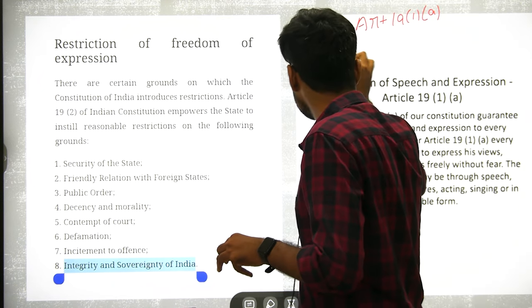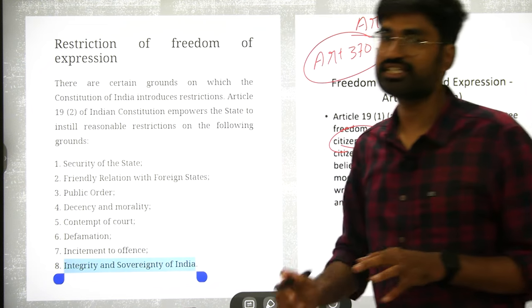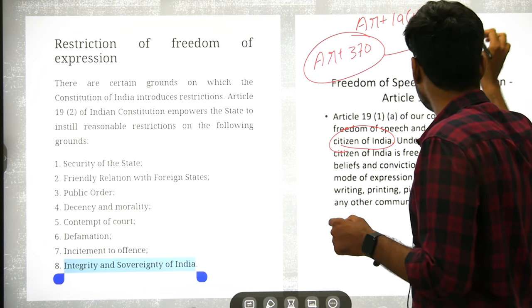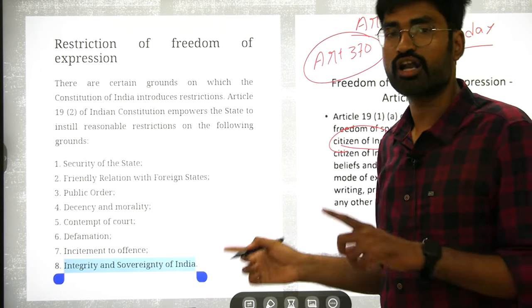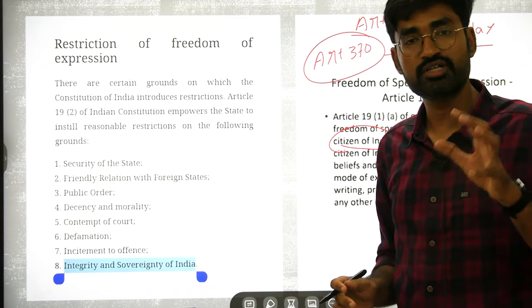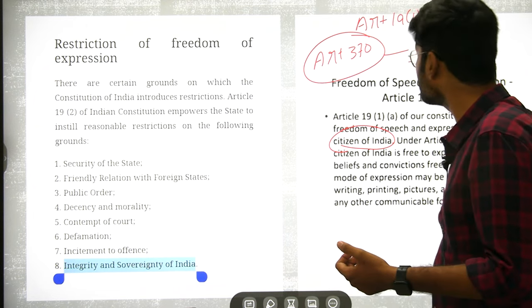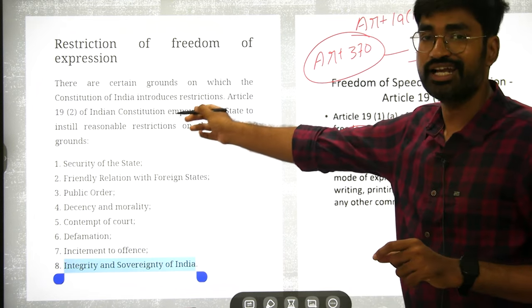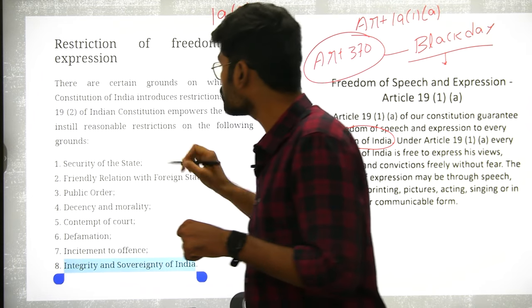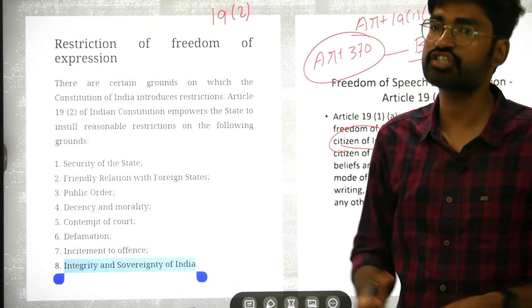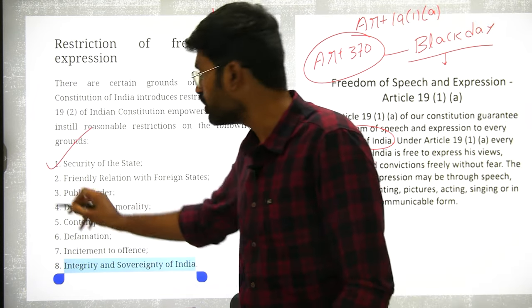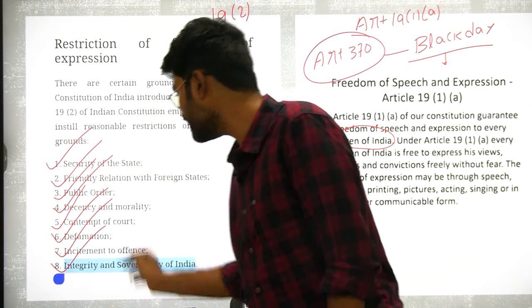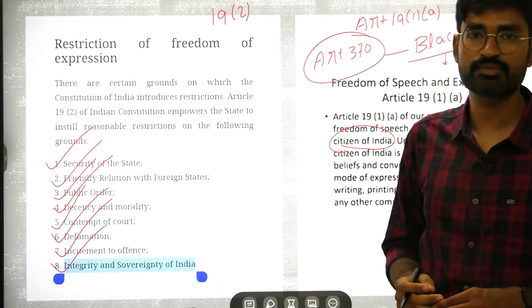In the scenario, a journalist called Article 370's abrogation a 'black day.' The Supreme Court dismissed cases against him because citizens have the right to criticize the government under Article 19(1)(a). However, Article 19(2) provides reasonable restrictions in situations involving: security of state, friendly relations with foreign states, public order, decency, contempt of court, defamation, incitement to offences, and integrity and sovereignty of India.